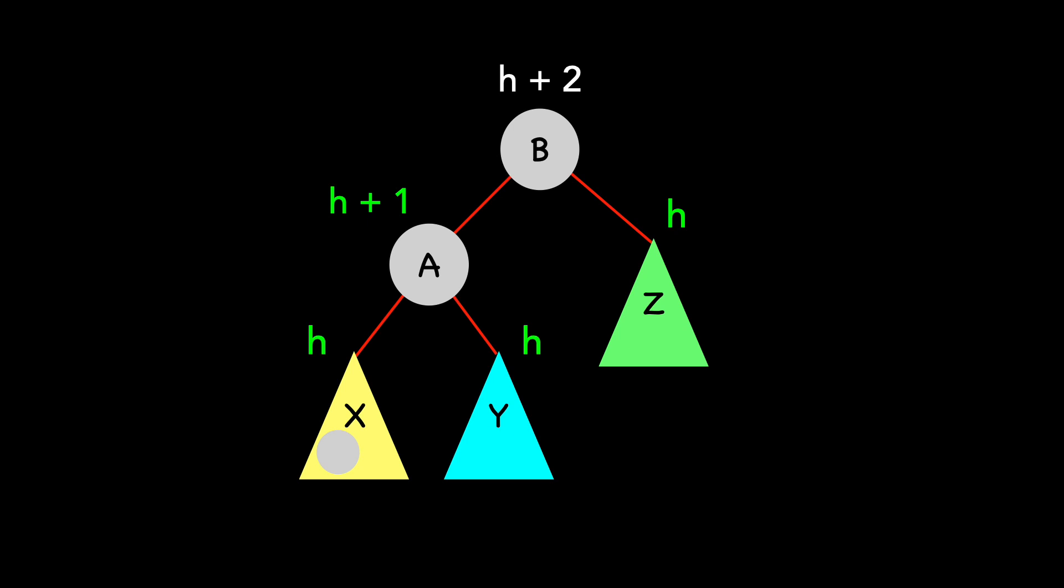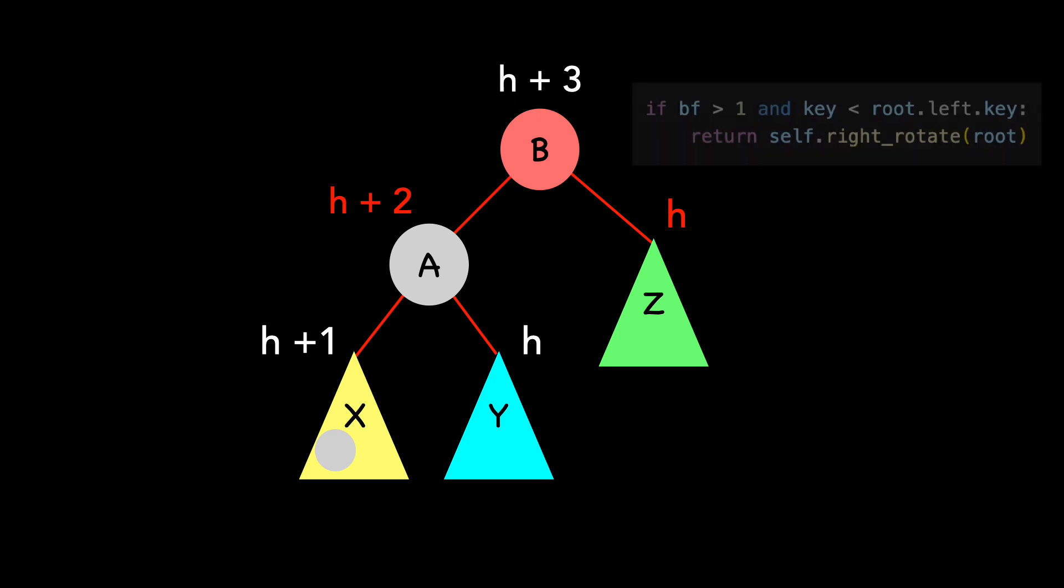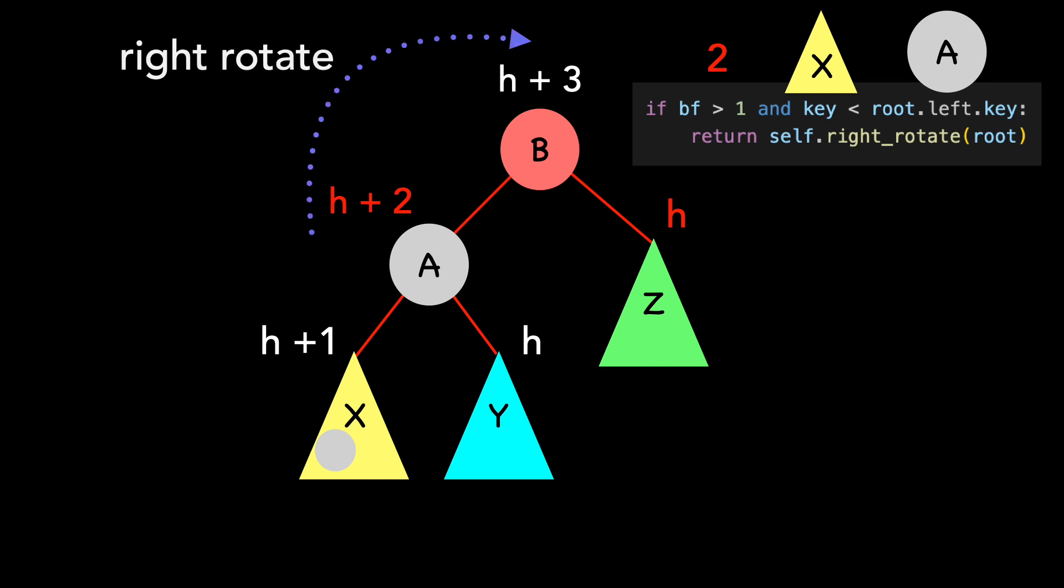However, what happens if we need to add another node into X? This increases the height of X by one and in turn the height of A and B by one. We now have a violation because A and Z have a height difference of two. This fits the following if condition. The balance factor is two. The node we added is in X, which is less than A, B's left child. The tree is left heavy, so we perform a right rotation.